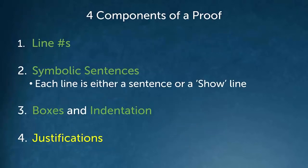So, four components of a proof then: line numbers, symbolic sentences, boxes, and indentation — and the fourth is justifications.